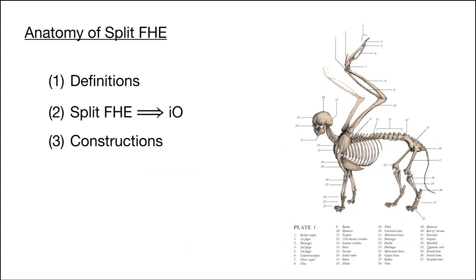The plan for the rest of the talk is to dissect the notion of split fully homomorphic encryption. I will present the definition of split FHE and show how split FHE implies iO. Then I will describe our construction — not very formally, but I want to convey the main ideas. If you are curious about the nitty-gritty details, I will point you to the paper at the very end of the talk.